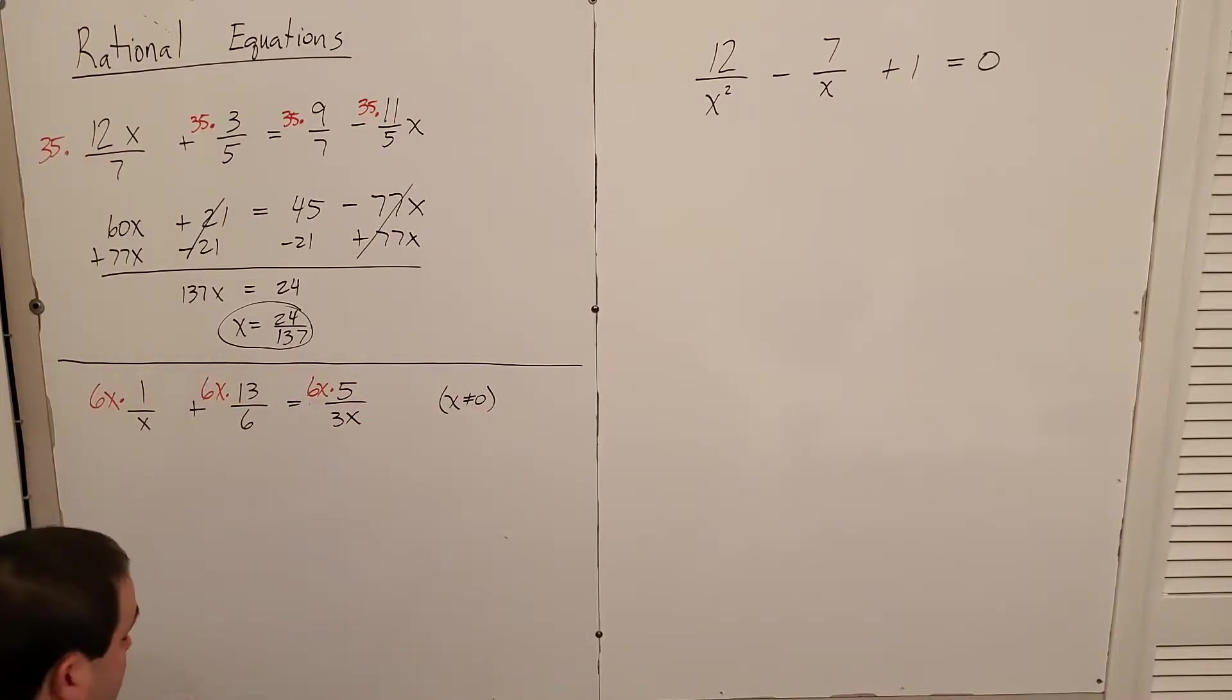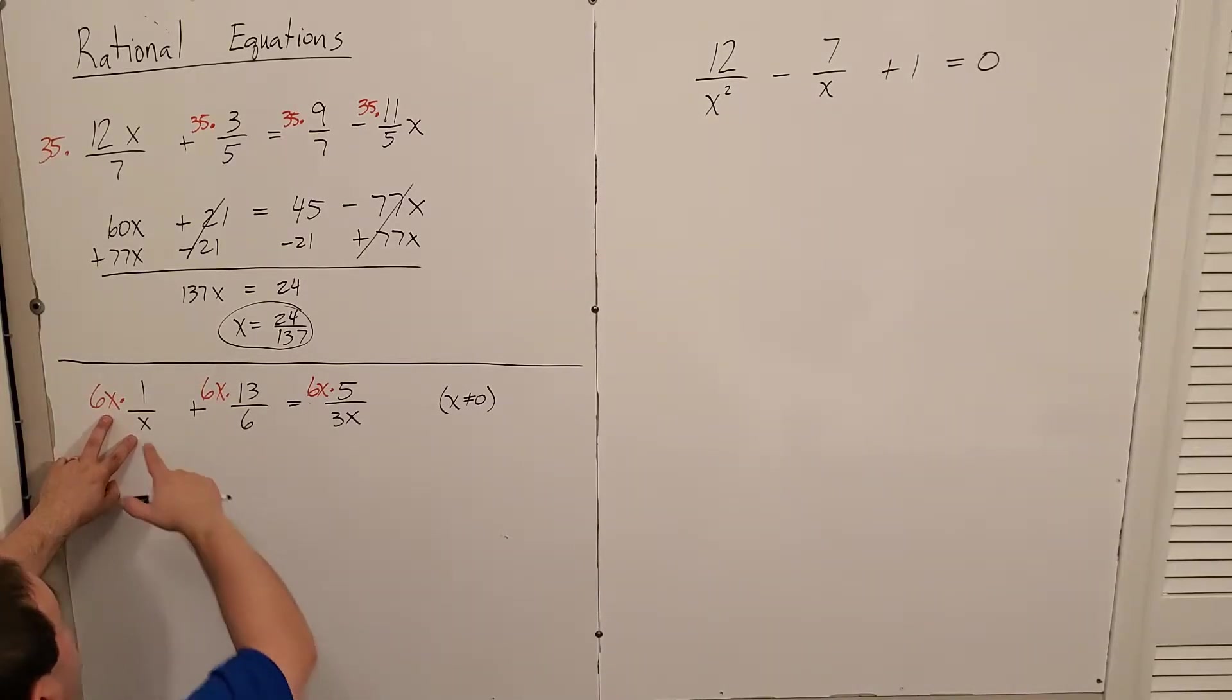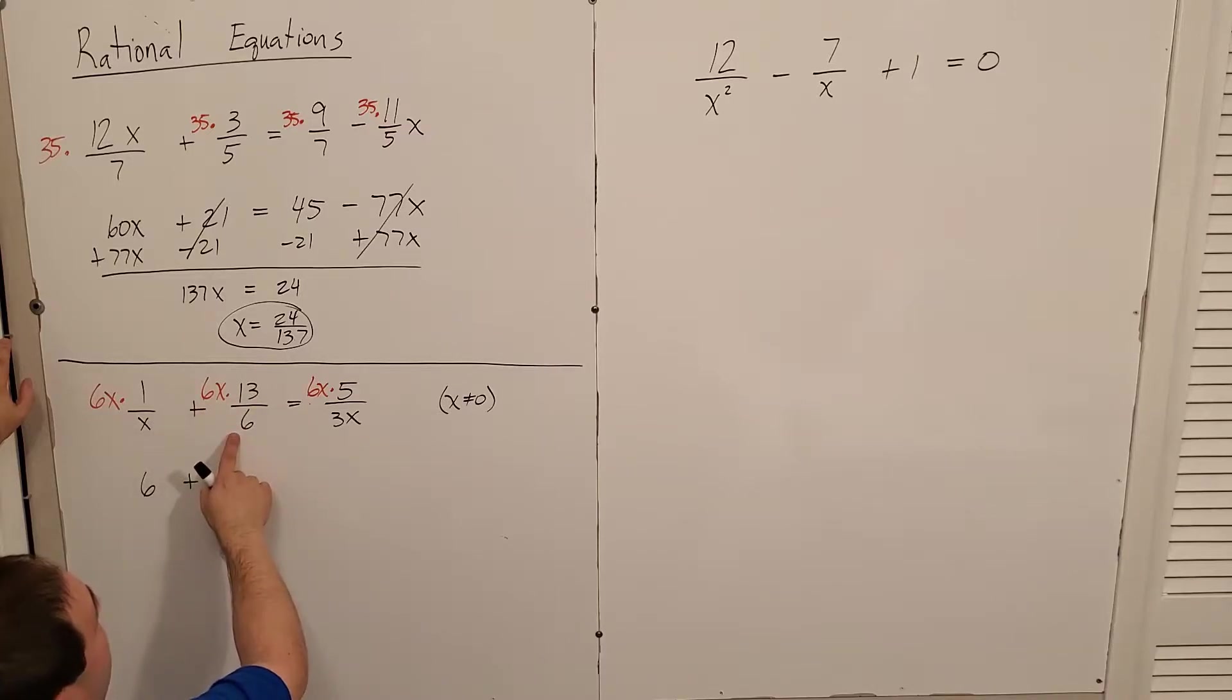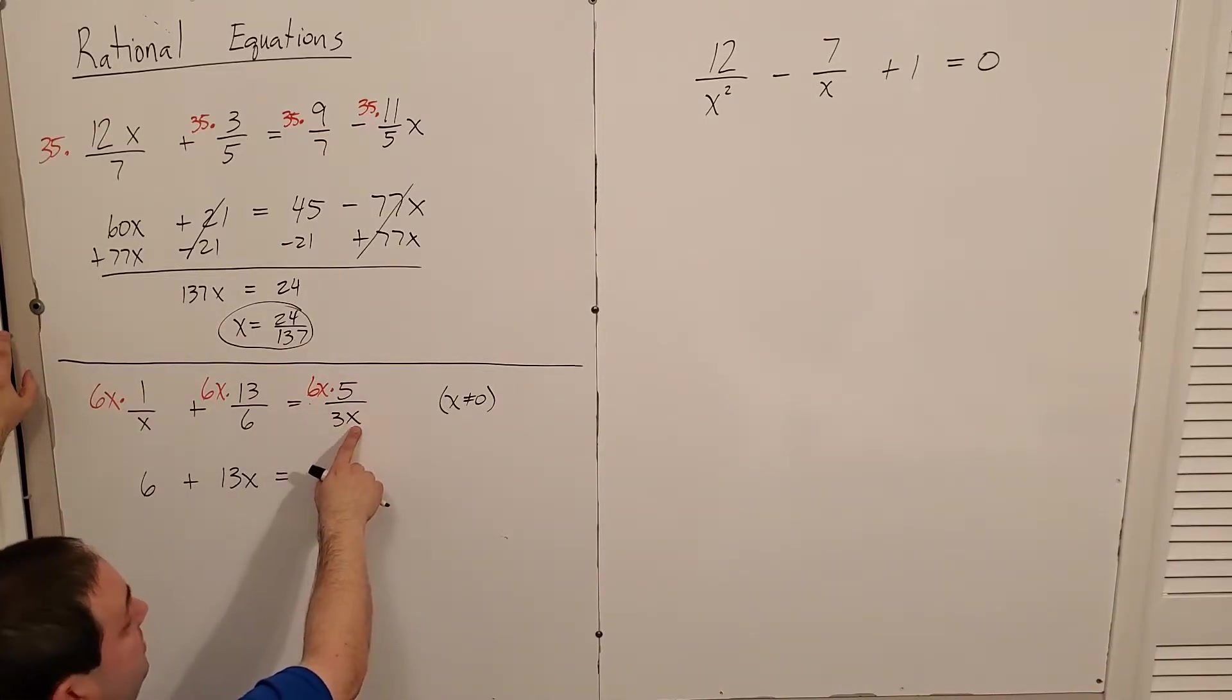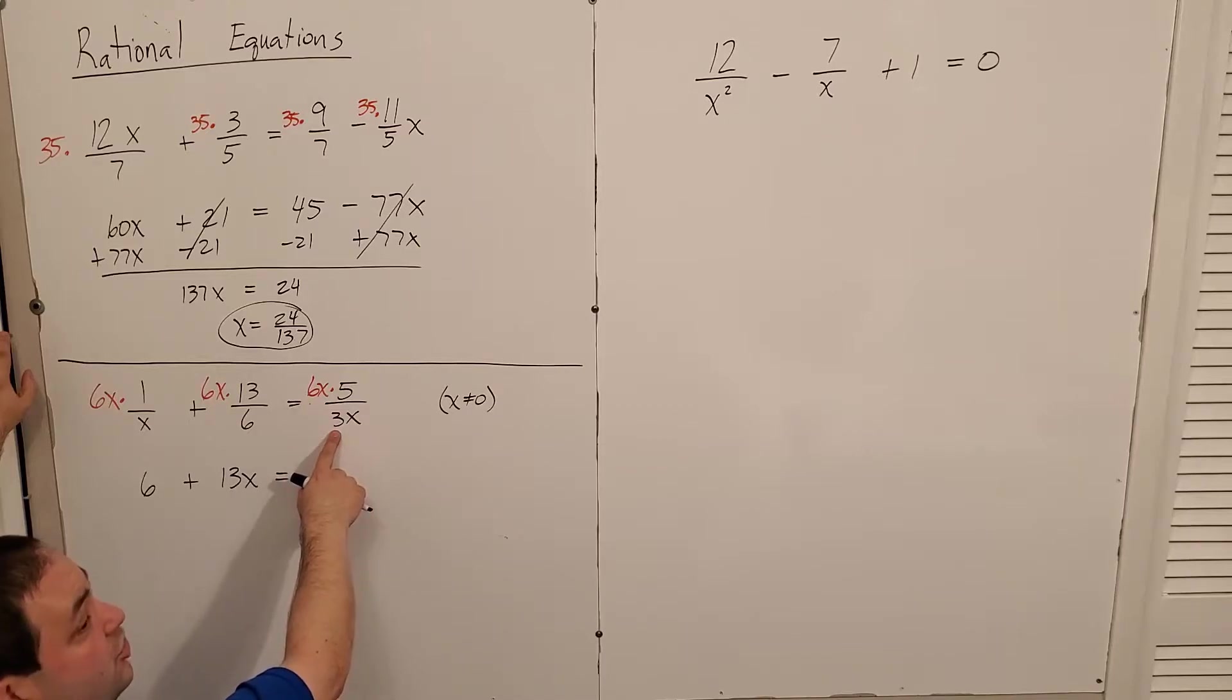And remember, do your multiplication divisions first, right? When you're multiplying, do these divisions first. x divided by x is one. One times six, I get six. Six divided by six is one. X times 13 is 13x. x divided by x is one. Six divided by three is two times five is 10.